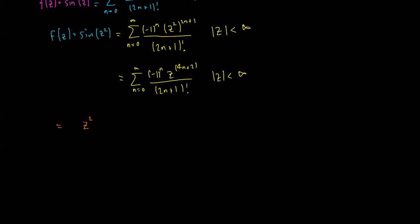The next term, n equal to 1, I get a minus. 4 times 1 is 4 plus 2, z to the 6, on 2 plus 1 is 3 factorial, so I get z to the 6 on 3 factorial, which is 6.